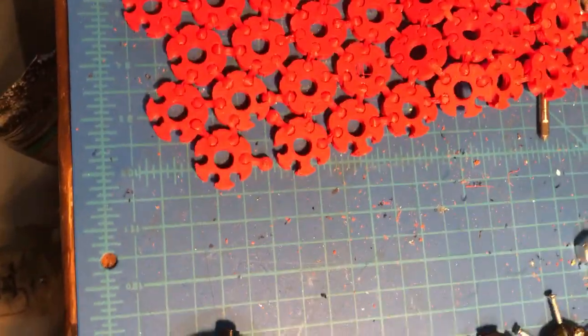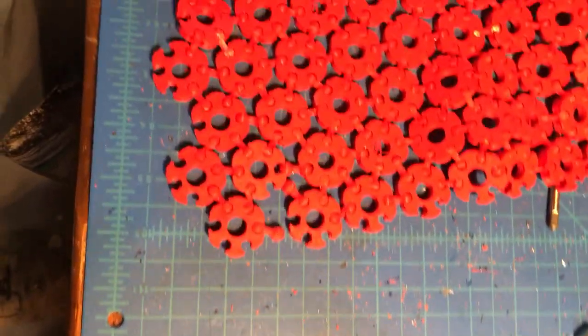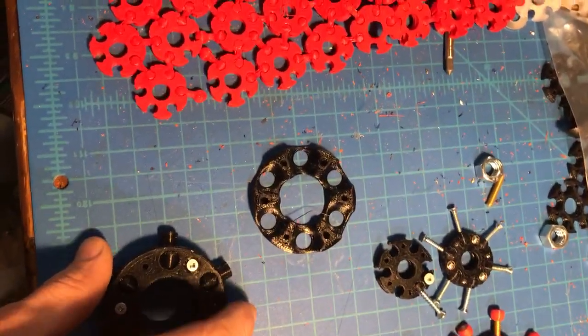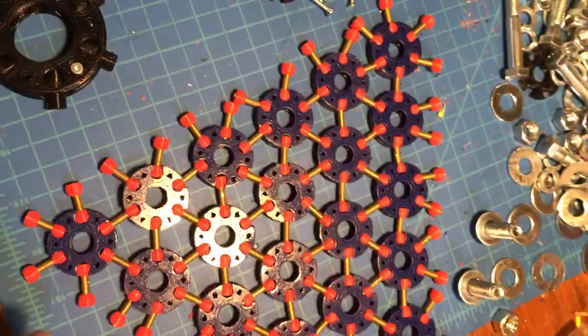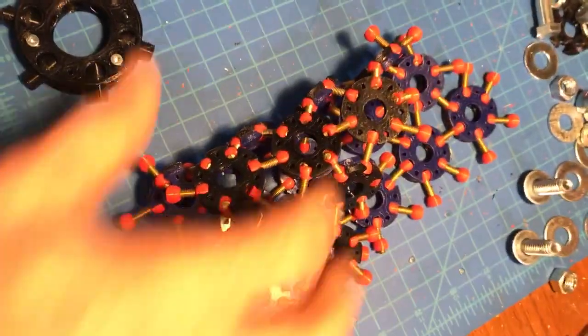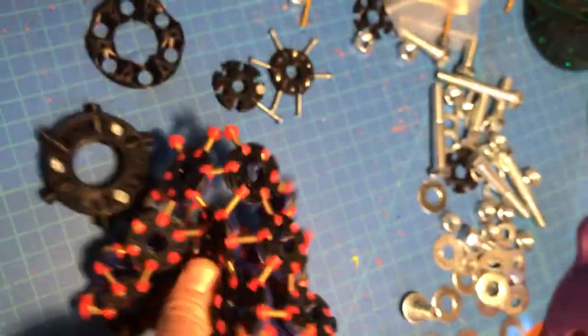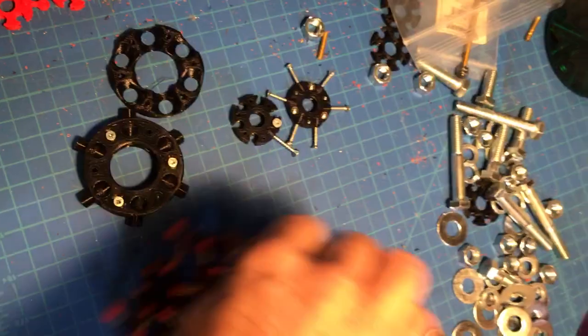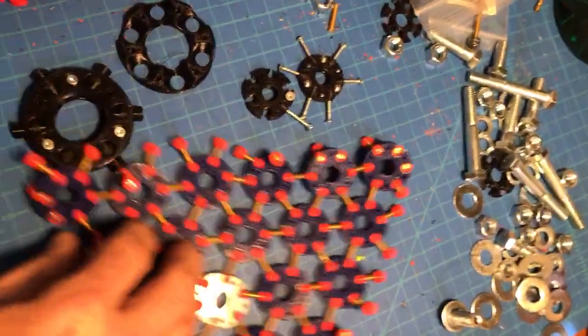So what I've switched to is two-part components, so it can't be printed in place, this newest version. But here's the next step of it. This makes a very soft fabric. Squish it up in a ball and unfold it.